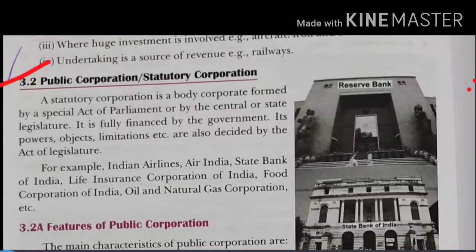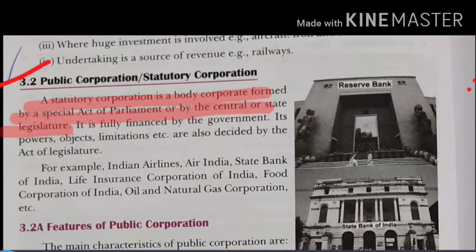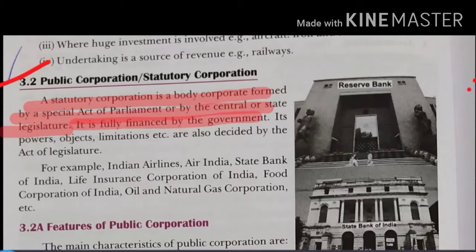Let's see what public corporation is. A statutory corporation is a body corporate formed by a Special Act of Parliament and by the Central and State Legislature. It is a special act passed in Parliament that gives the enterprise the name of a statutory corporation. It is fully financed by the government — the entire enterprise, the whole public corporation, is fully financed by the government.